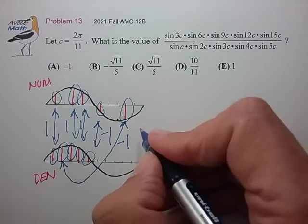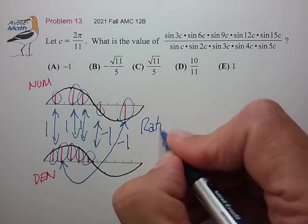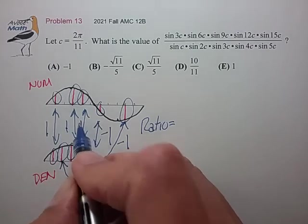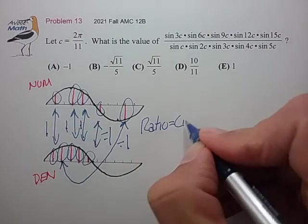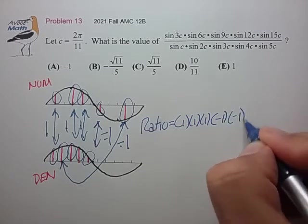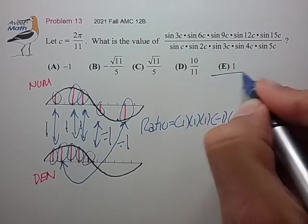So the grand ratio then is just 1 times 1 times 1 times minus 1 times minus 1, which equals 1 for choice E.